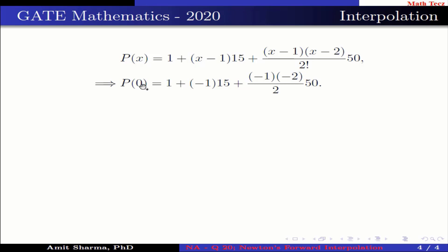This implies P(0) = 1 + (-1)·15 + [(-1)(-2)/2]·50 = 1 - 15 + 50 = 36. Therefore, P(0) = 36.